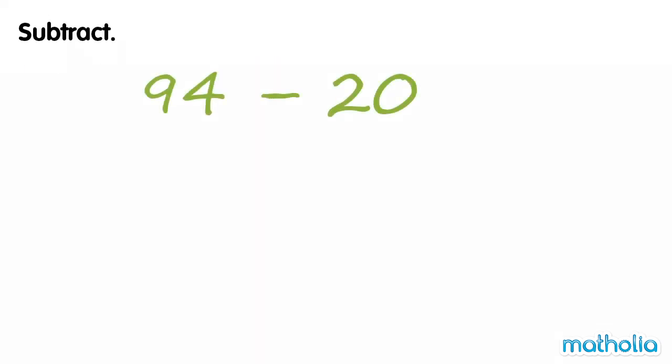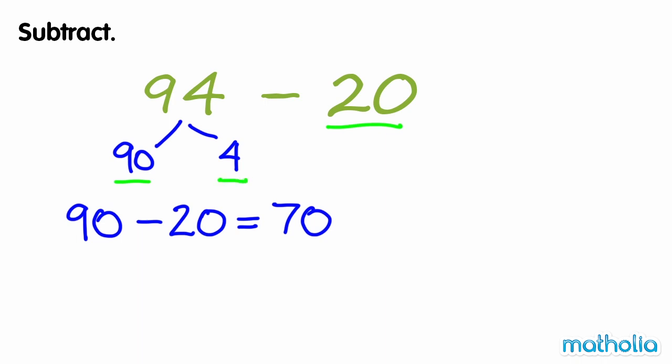Subtract. We need to find 94 minus 20. We can separate 94 into tens and ones to give 90 and 4. Start by subtracting the tens. 90 minus 20 equals 70. Now we add the ones. 70 plus 4 equals 74. So 94 minus 20 equals 74.